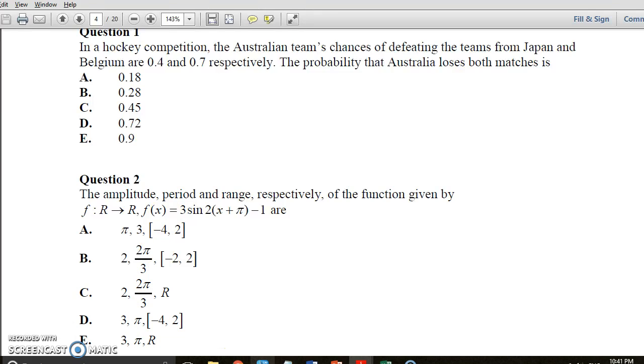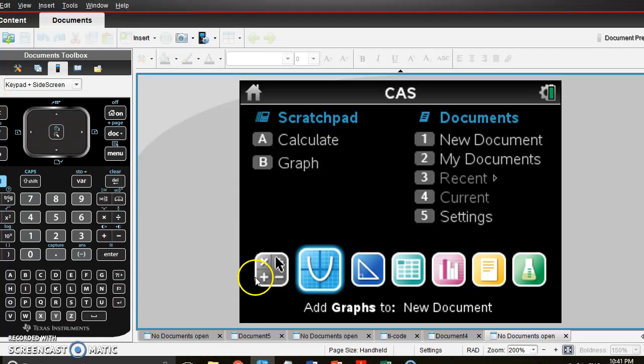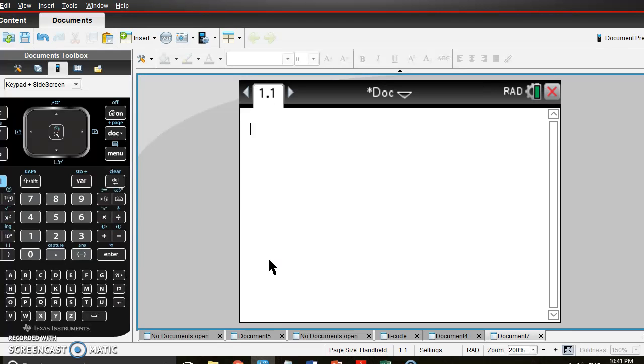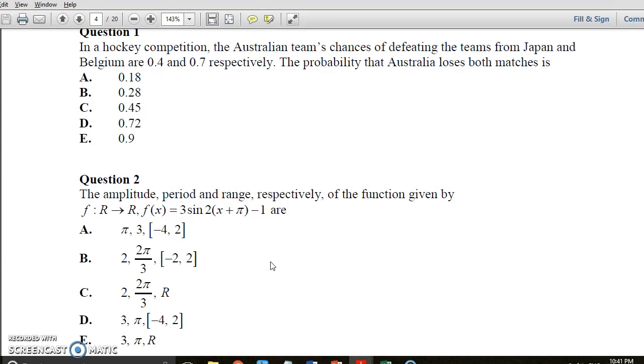So on CAS, start up a new calculator, we say 0.3 times 0.6 because they've lost those. 0.18, so that's our answer for that one, 0.18.